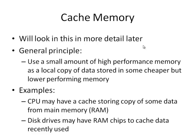We also have cache memory, which we'll cover elsewhere in the course. The general principle is that a small amount of high-performance memory can act as a local copy of data stored in a cheaper but slower memory form. Most CPUs have a cache that stores some program data from main memory, allowing the CPU to operate at full speed and only slow down when it needs to fetch another chunk from main memory. Hard disks may also use RAM chips to cache recently accessed data to allow faster access.